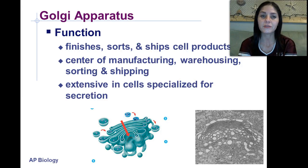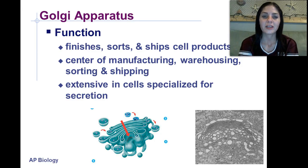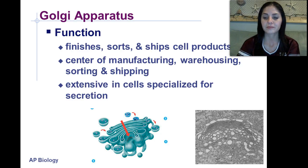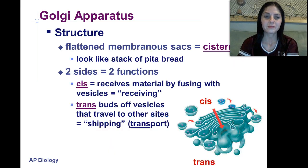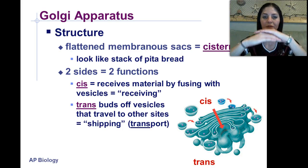The function of the Golgi apparatus is to finish, sort, and ship cell products. It is the center of manufacturing or warehousing, in charge of sorting and shipping different molecules in the cell. It's extensive in cells specialized for secretion. It has a flattened membranous sac called cisternae, and it looks like a stack of pita bread — all these little folds.